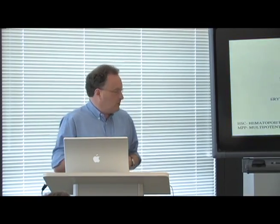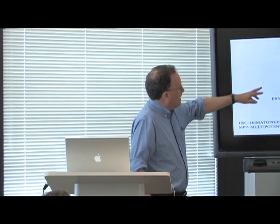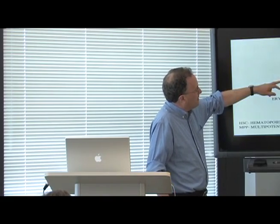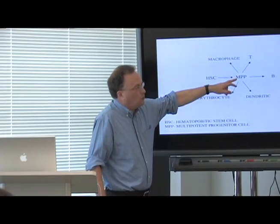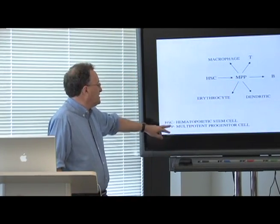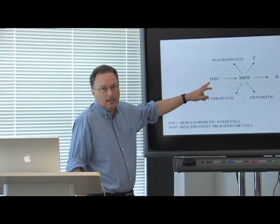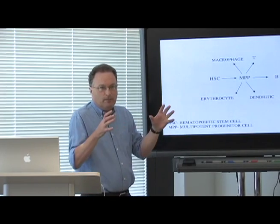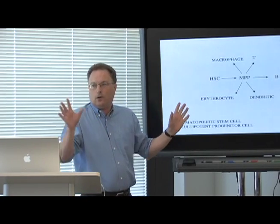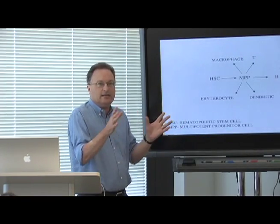I'll first introduce the developmental pathway by which lymphocytes come from a hematopoietic stem cell. The HSC will develop over time into what is called an MPP — a multipotent progenitor cell that is very similar to a hematopoietic stem cell, except that it cannot self-renew.